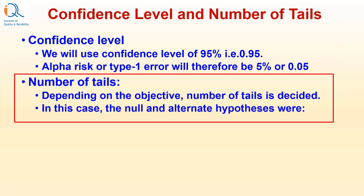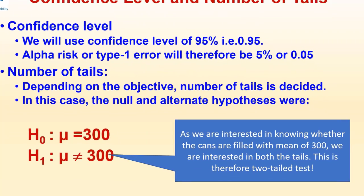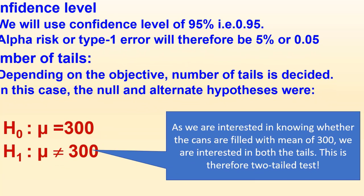Number of tails: Depending on the objective, number of tails is decided. In this case, the null and alternate hypothesis were H0: mu equals 300 and H1: mu not equal to 300. As we are interested in knowing whether the cans are filled with mean 300, we are interested in both the tails. This is therefore a two-tailed test.